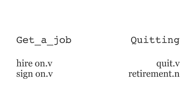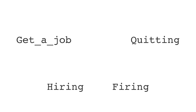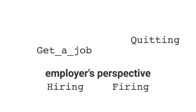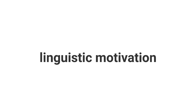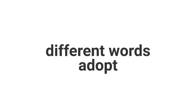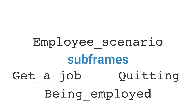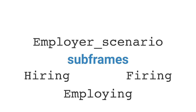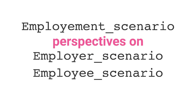Now, what did you notice about these frames? We know for sure that all these frames are part of the employment experience. However, at the same time, there are distinctions that are accounted for by FrameNet. While hiring and firing take the employer's perspective, the 'get a job' and the 'quitting' frames take the employee's point of view. There is a linguistic motivation for such a distinction, because different words adopt different framings. So, 'get a job' and 'quitting' are said to be subframes of the employee scenario. The scenario also includes the 'being employed' frame. Similarly, hiring and firing, together with employing, are subframes of the employer scenario. The employer scenario and the employee scenario frames are two perspectives on a broader frame: the employment scenario.